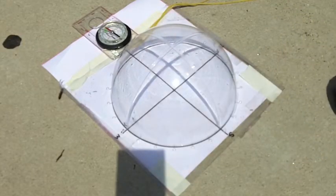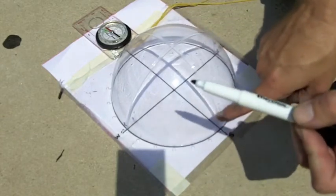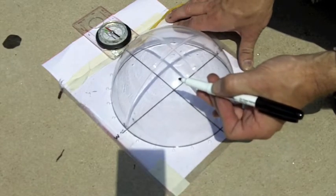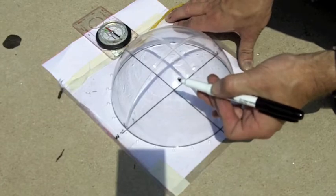Once you've got that lined up, you can take your pen and you can see the shadow of the pen there. I'm going to line the shadow of the pen up with the crosshairs in the middle of the dome and draw a dot right there.